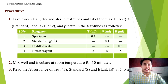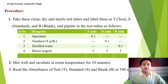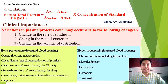For the procedure, take 3 clean, dry test tubes and label them T for test, S for standard, and B for blank. Pipette as indicated in the table: sample into T, standard (8 g/dL used here) into S, and distilled water into B. Add 5 ml of biuret reagent to all three, mix well, and incubate at room temperature for 10 minutes. Then read absorbance of test, standard, and blank at 540 nm. Calculation: Serum total proteins (g/dL) = (Absorbance of Test − Absorbance of Blank) ÷ (Absorbance of Standard − Absorbance of Blank) × concentration of standard (8 g/dL). Here A stands for absorbance.